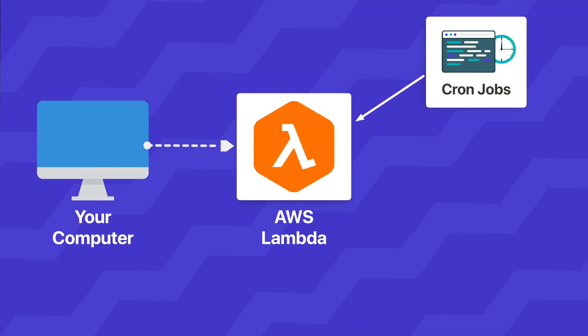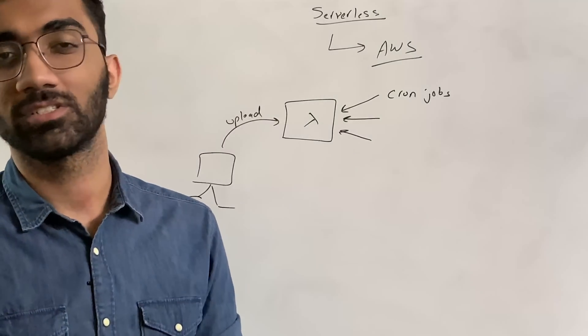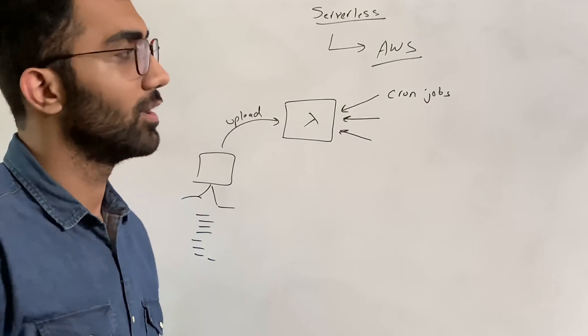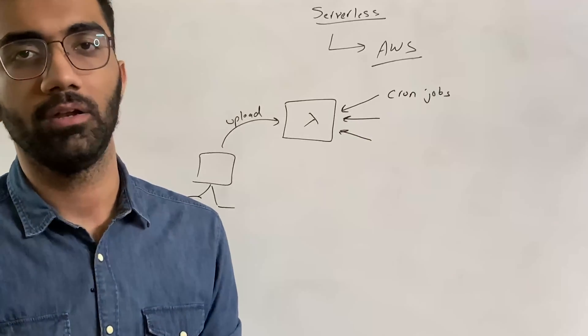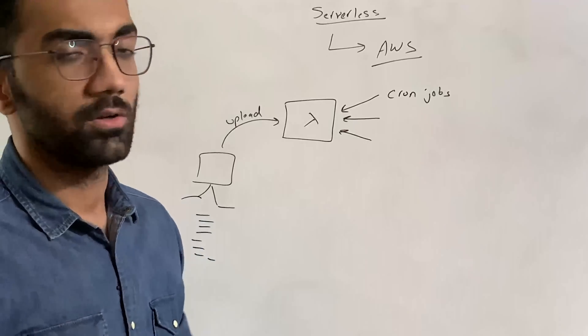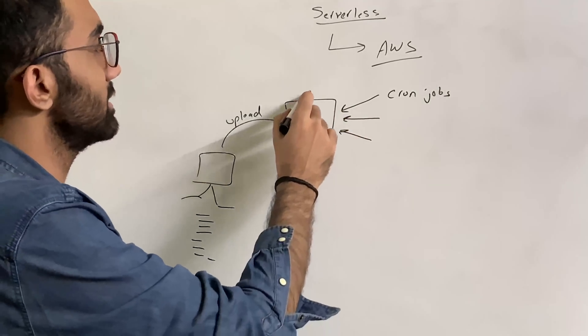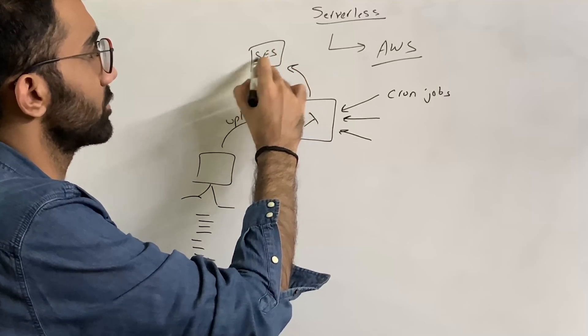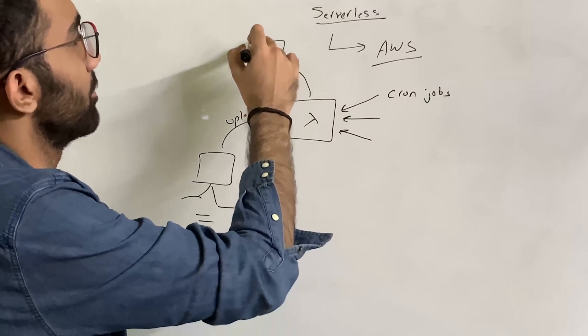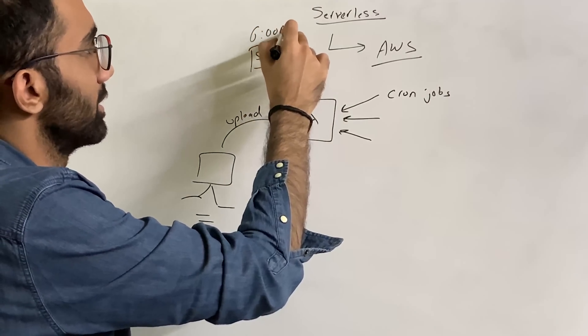These triggers could be cron jobs. So for example let's say you want a good morning email from yourself from your computer on 6 a.m. every day, your time zone. You can set up a cron job which runs an AWS Lambda trigger which sends an SES email which is another service from AWS every 6 a.m. So this is how you can configure that.